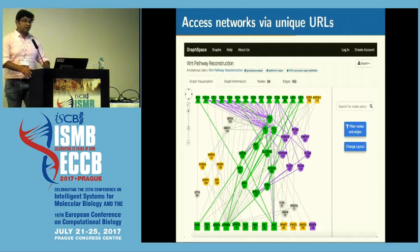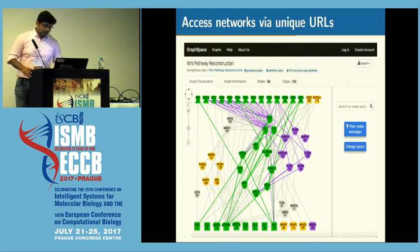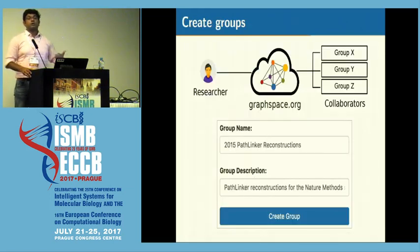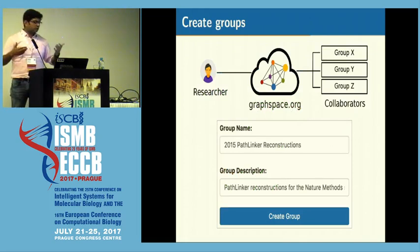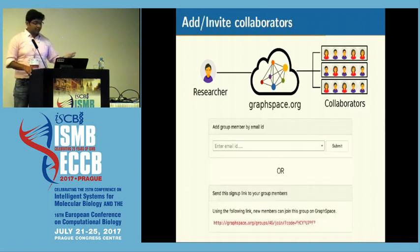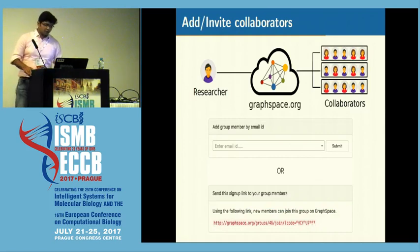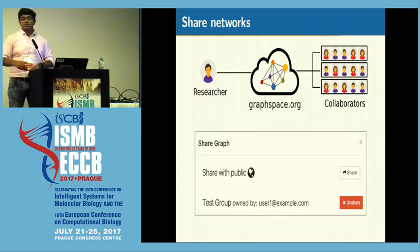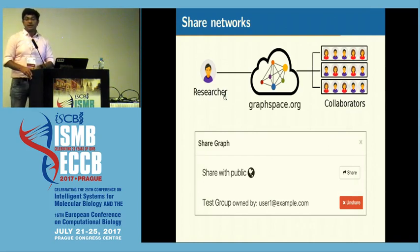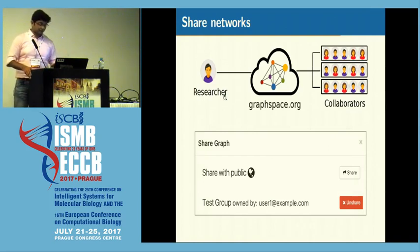But of course, there are some benefits of signing up. Once you are signed up, you get more control over who you want to share your networks with. You can create more than one collaborative group. Then you can add your collaborators through their Graphspace usernames or you can invite them through an invitation link. Once you have added your collaborators, you can share your networks with them through an easy-to-use interface. And you can also use the same interface to share your networks with the public as well.